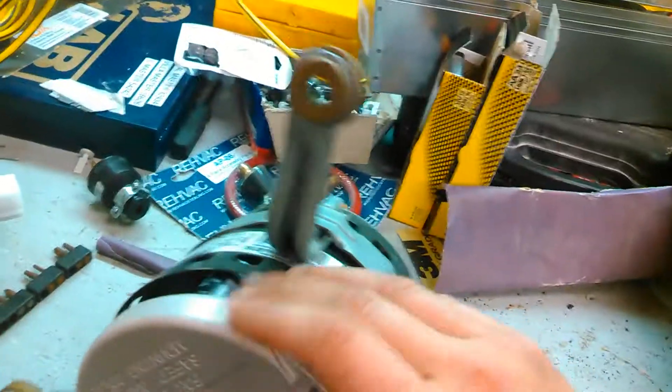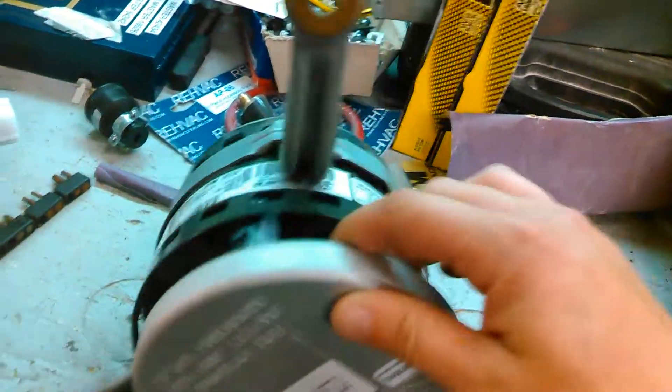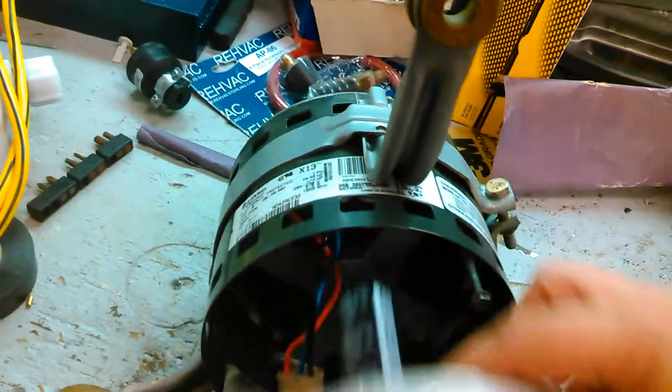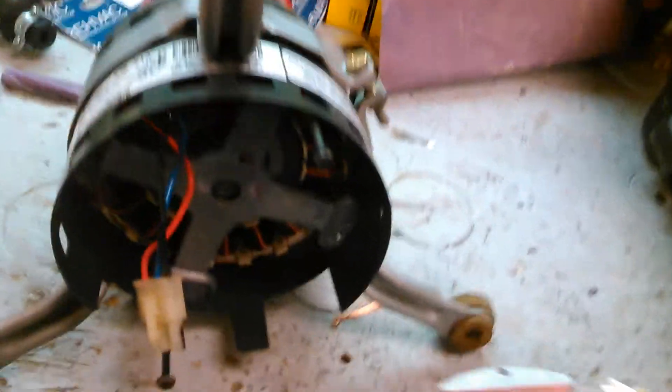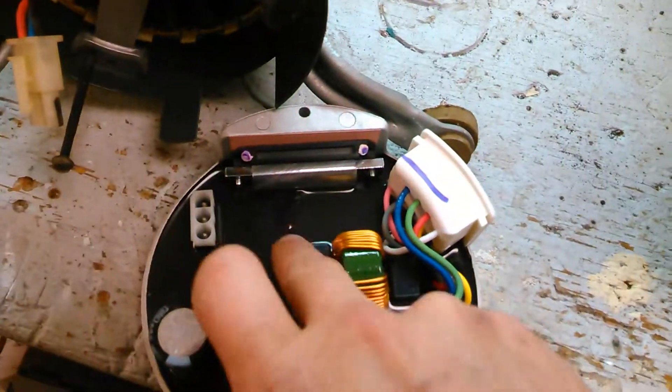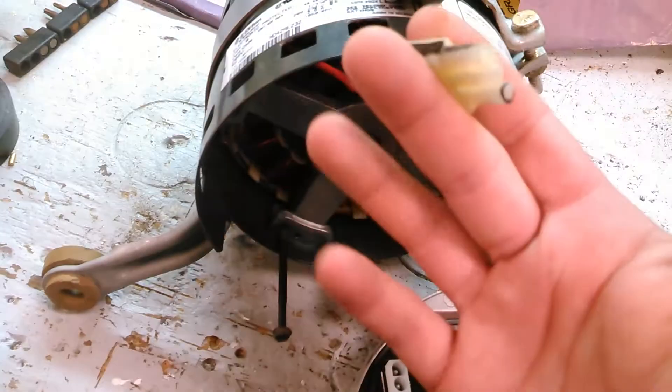We removed this one just because we had a noob that didn't know that you could just take this module out and unplug it. The module is potted with nice rubber so you can't see the circuitry underneath it. This is a brand new module, this is the same motor.